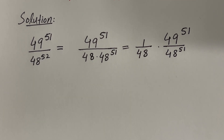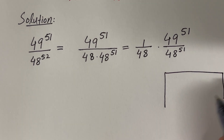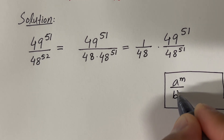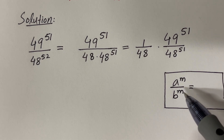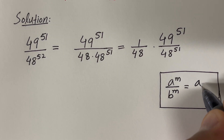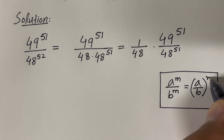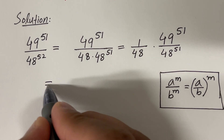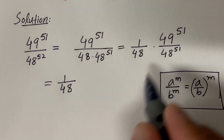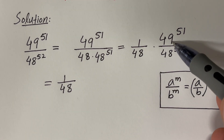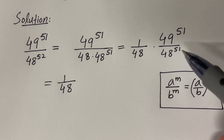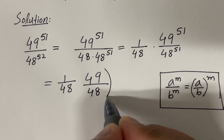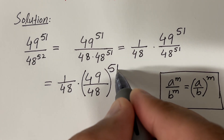Now I can use the property that says if you have a raised to the power m divided by b raised to the power m — two numbers raised to the same exponent — that equals a divided by b, whole raised to the power m. Applying this, we get 1 over 48 times (49/48) raised to the power 51.